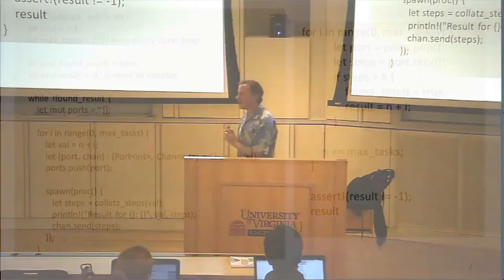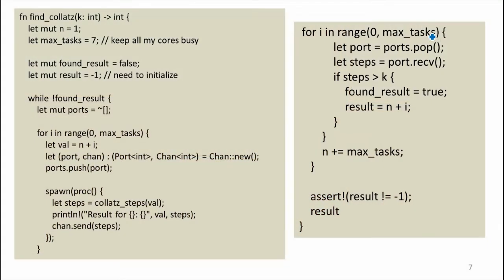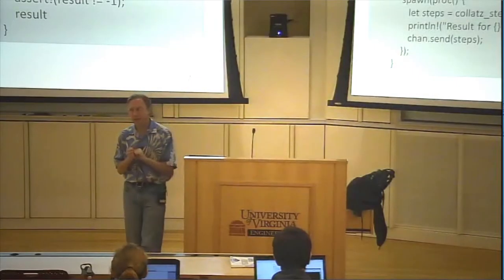But this was the code I had, which actually runs much slower than the single-threaded original Collatz code. But it is using multiple cores, so here's what we're doing. Creating a vector of ports, and we're going through—so I set 7 as the maximum number of tasks. Probably not a great choice, but not a horrible one. So I have 8 cores. Why did I pick 7 instead of 8?